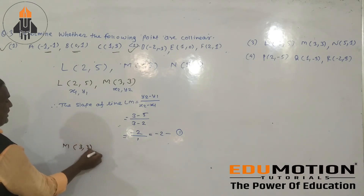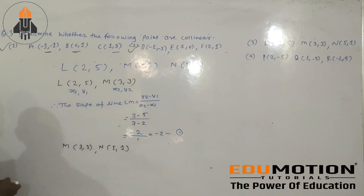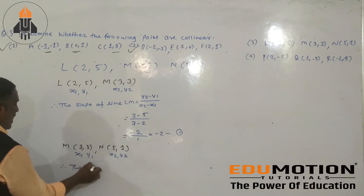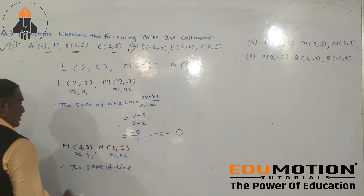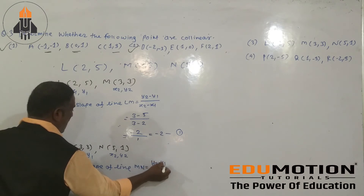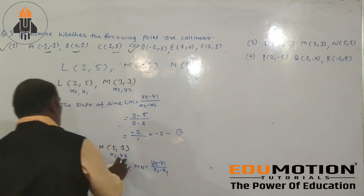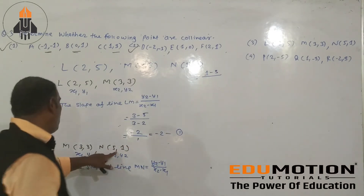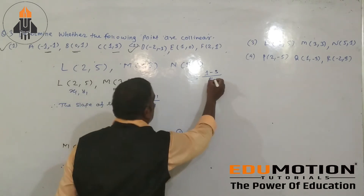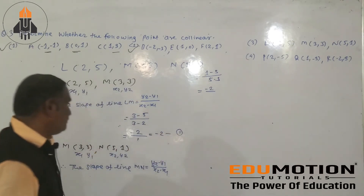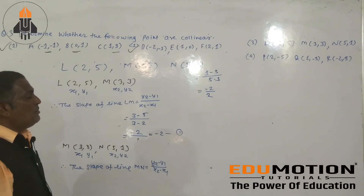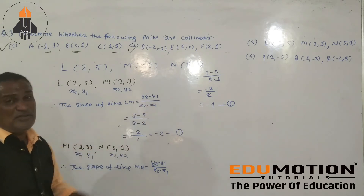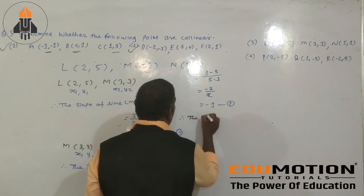Now take coordinate (3, 3) and coordinate (5, 1) as x1, y1, x2, y2. The slope of line 2 equals y2 minus y1 divided by x2 minus x1. That is 1 minus 3 divided by 5 minus 3, giving minus 2 divided by 2, equal to minus 1. This is equation number 2. From equations 1 and 2: slope of line 1 is minus 2 and slope of line 2 is minus 1. They are not equal.